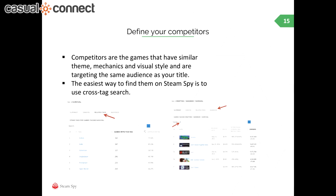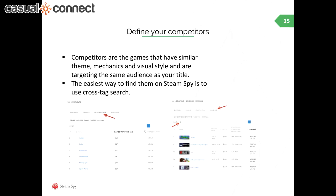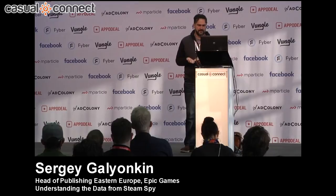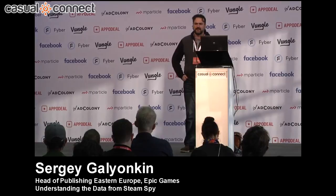Then you define competitors — games that are similar to you in mechanics and visual style. If your game is on Steam, Steam Spy is a good tool here. The easiest way to research them is to use cross-tag search. On Steam Spy, cross-tag search works simply: you select one tag, then another, and so on, until you get a manageable sample — not 200 games, but maybe 20 or 30.